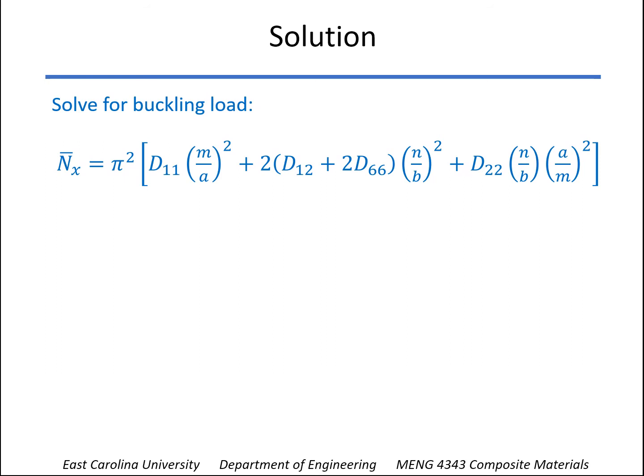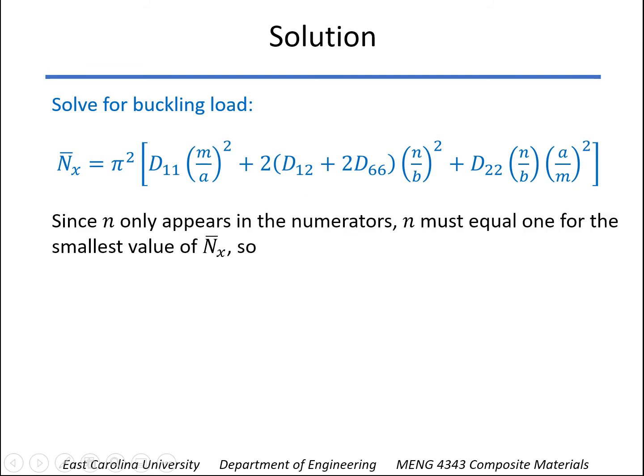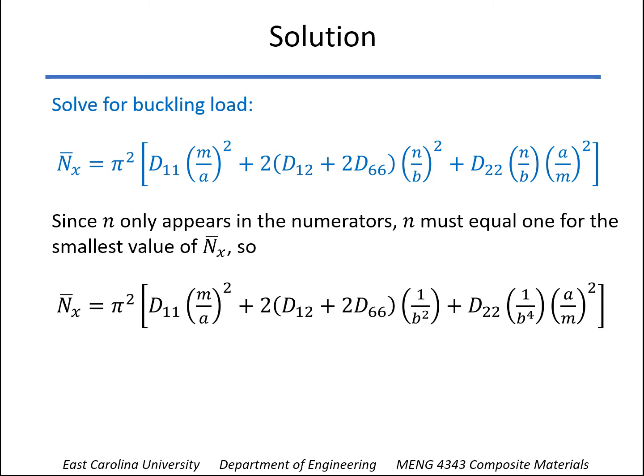One thing you notice out of this is that N only appears in the numerator here and here. But M is in the numerator and in the denominator. So you can say for sure that N has to equal 1 to get to the critical value, the smallest value of n_x. But you're not sure about M. So you have to try different values of M.